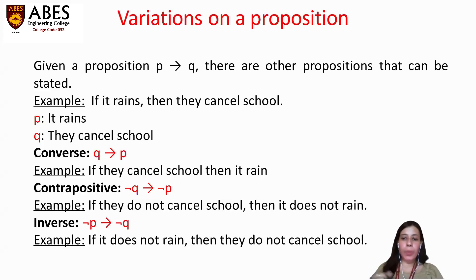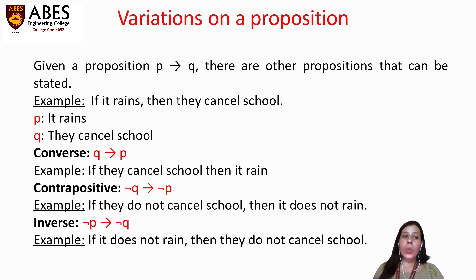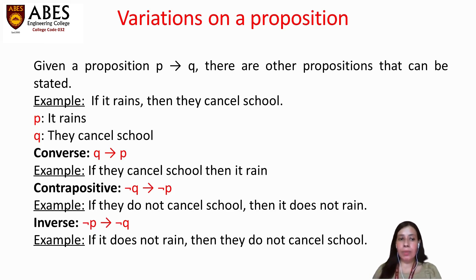There are certain variations on a conditional proposition. Given P → Q, consider the example: 'If it rains, then they cancel school,' where P is 'it rains' and Q is 'they cancel school.' The converse is Q → P: 'If they cancel school, then it rains.' The contrapositive is ¬Q → ¬P: 'If they do not cancel school, then it does not rain.' The inverse is ¬P → ¬Q: 'If it does not rain, then they do not cancel school.'